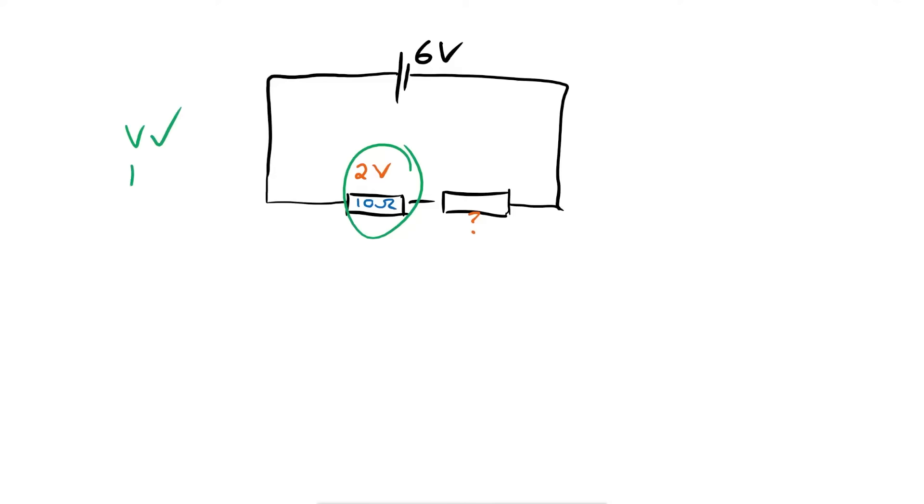Well firstly we need to find out one more thing about this first resistor. We have V and we have R. What can we find out about this resistor then? We can find out the current. Of course for that we can use V equals IR, rearrange it. Current is equal to V divided by R. So that's equal to two divided by ten and that gives us 0.2 amps.